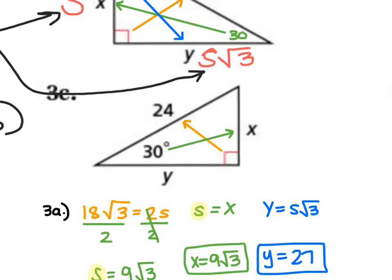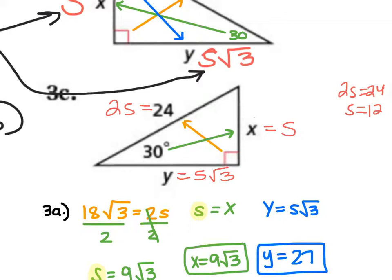In 3C, opposite the 30° is S, opposite the 60° is S√3, and opposite the 90° is 2S. The given side is 2S = 24, so S = 12. Therefore X = 12 and Y = 12√3.